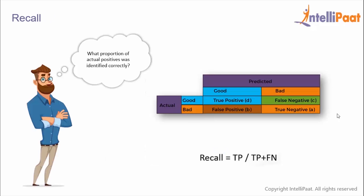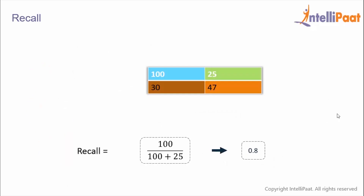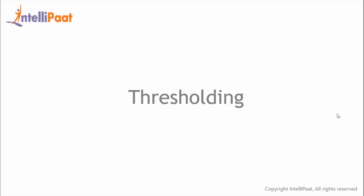The next performance metric is recall. This gives us the proportion of actual positives which were identified correctly. We calculate recall by dividing true positives by the sum of true positives and false negatives. With 100 true positives and 25 false negatives, we divide 100 by 125, giving a recall value of 0.8.